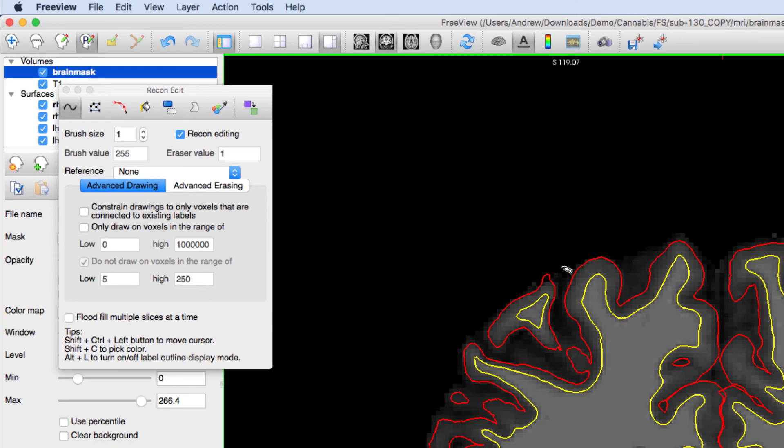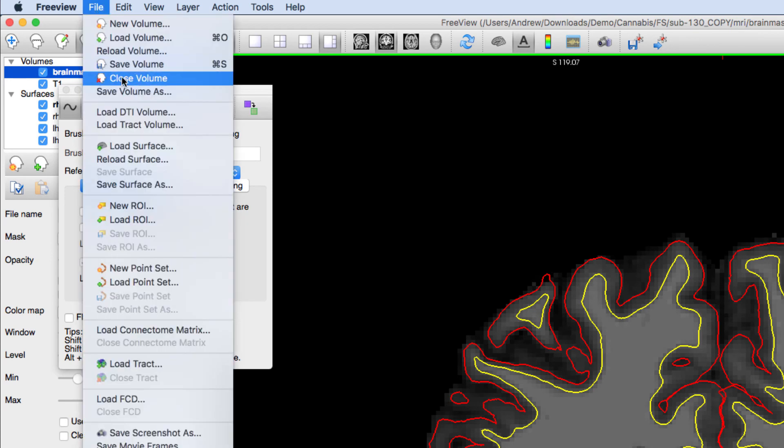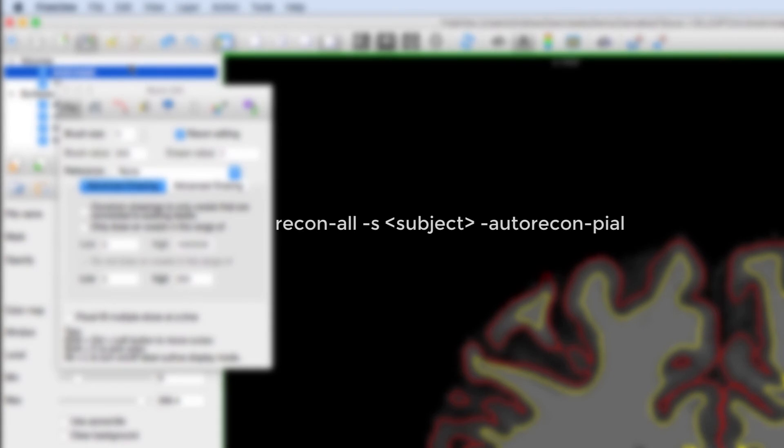Once you're done, click on File, Save Volume. Then you can run Recon All, starting at the peel reconstruction stage.